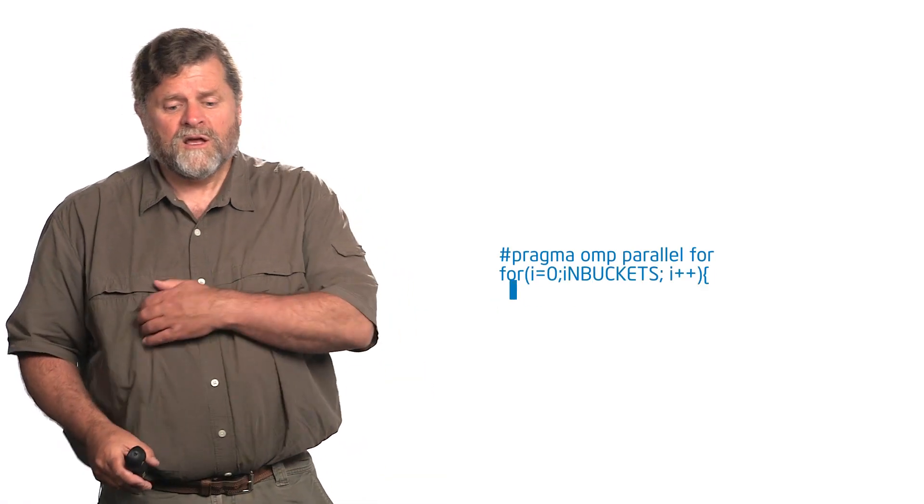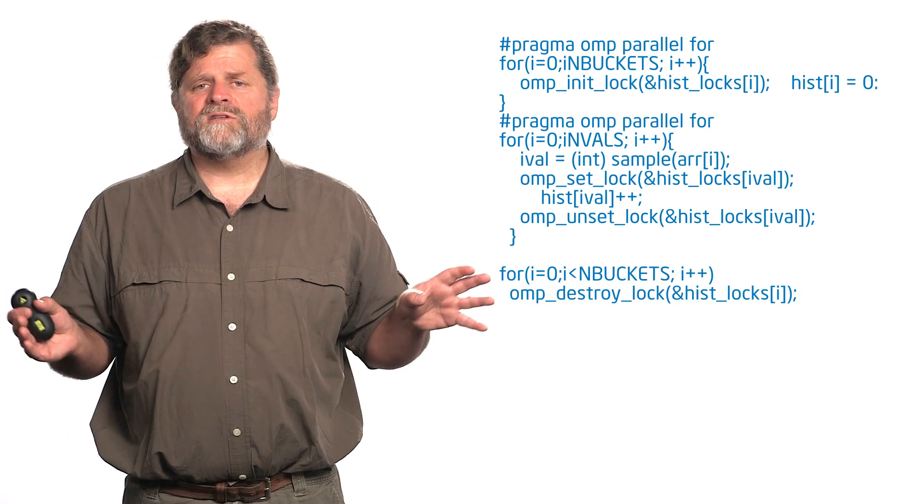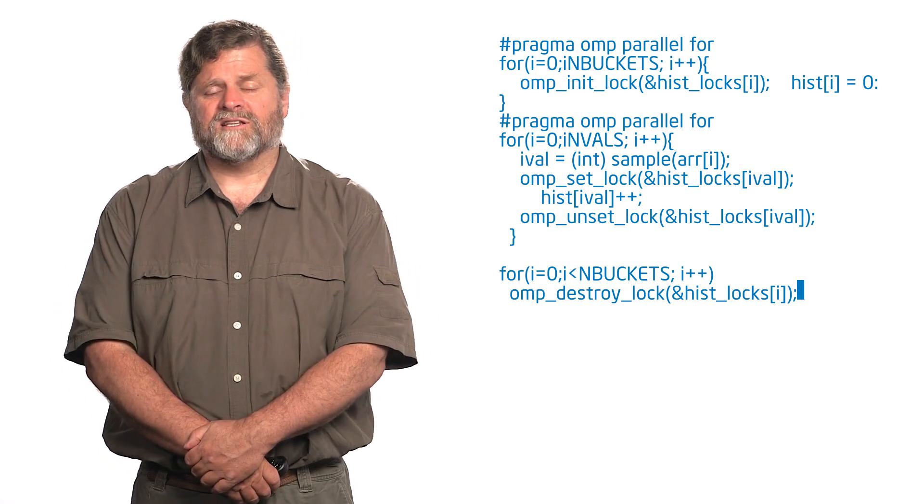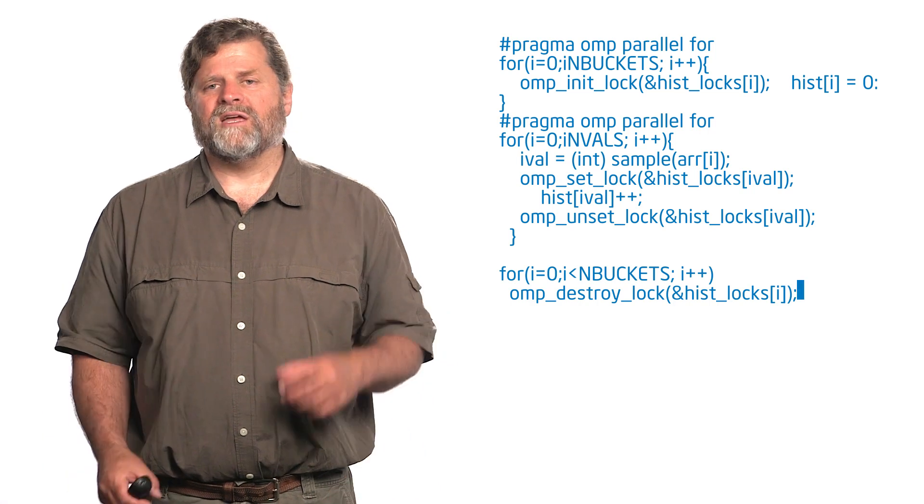So here's the code for that. Pragma OMP parallel for, I want to do this in parallel. What I'm going to do is I'm going to initialize the locks for the array of locks to attach to the histogram. And so that's what you see right there inside the loop. I have omp_init_lock.